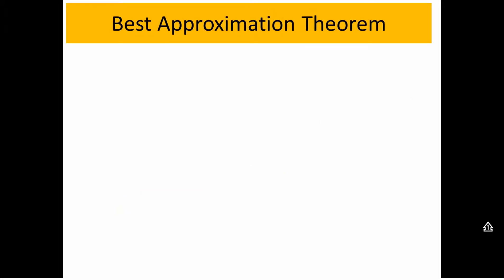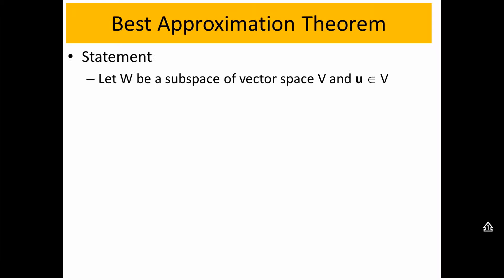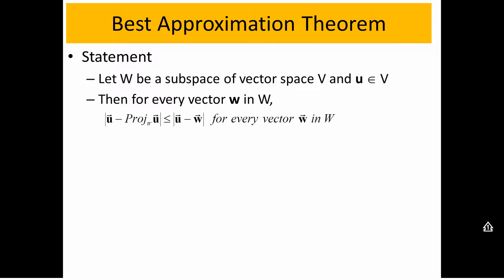The first thing we're going to look at is what's called the best approximation theorem, and it's going to be the guarantee that that projection is the best solution. So we're going to say that if we have some subspace W of V and a vector U in V, we're going to make the claim that for every other vector W in the subspace, the norm of U minus W is greater than or equal to the norm of U minus the projection of U onto W.